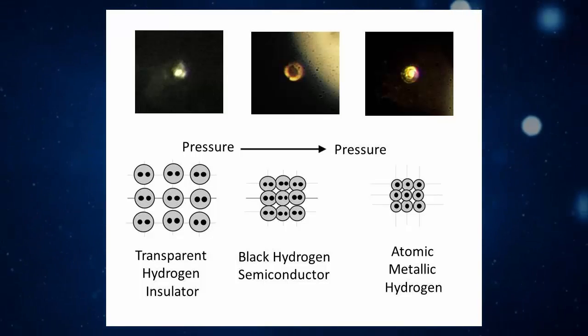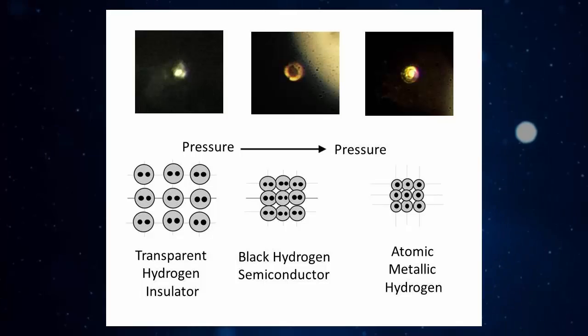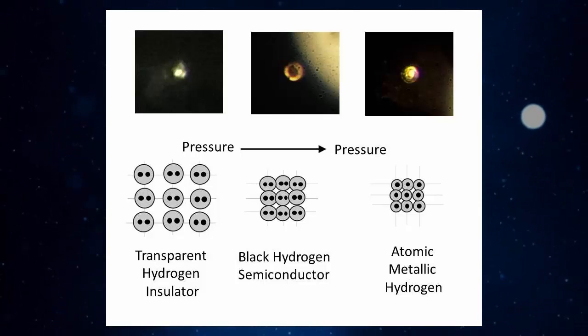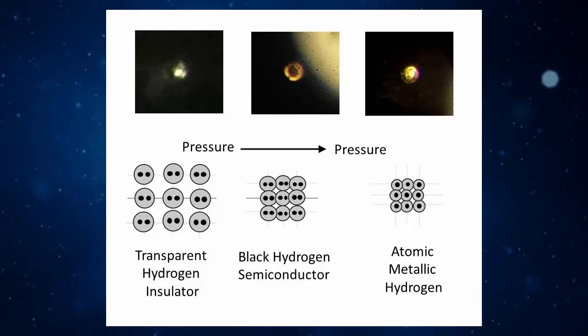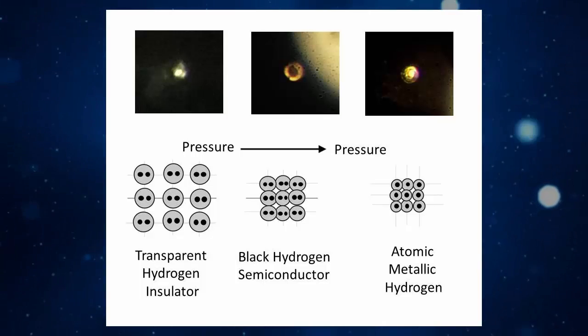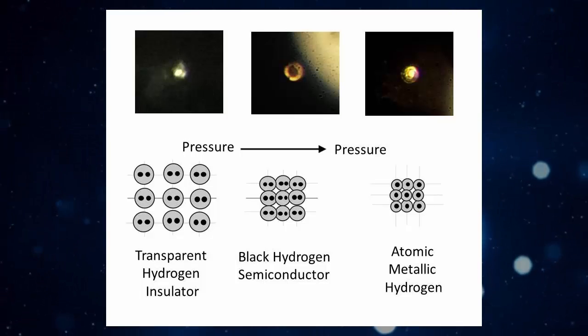The team quickly saw its appearance change, but to verify that what they'd created was metallic hydrogen, they used spectroscopic measurements, including measuring its reflectivity, and showed that what was originally a standard hydrogen gas had transformed into an atomic metal. You can see the different atomic structure.